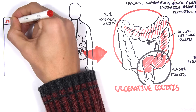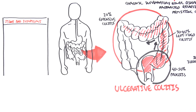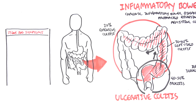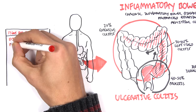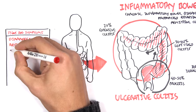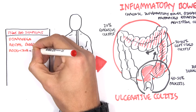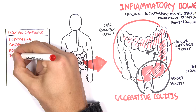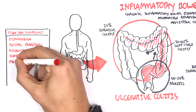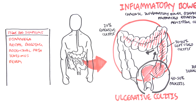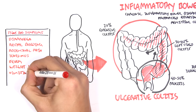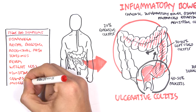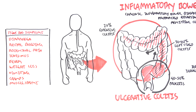Signs and symptoms of inflammatory bowel disease can include, but not always: diarrhea, rectal bleeding, abdominal pain, tenesmus, fever, weight loss, vomiting, cramps, and muscle spasms.